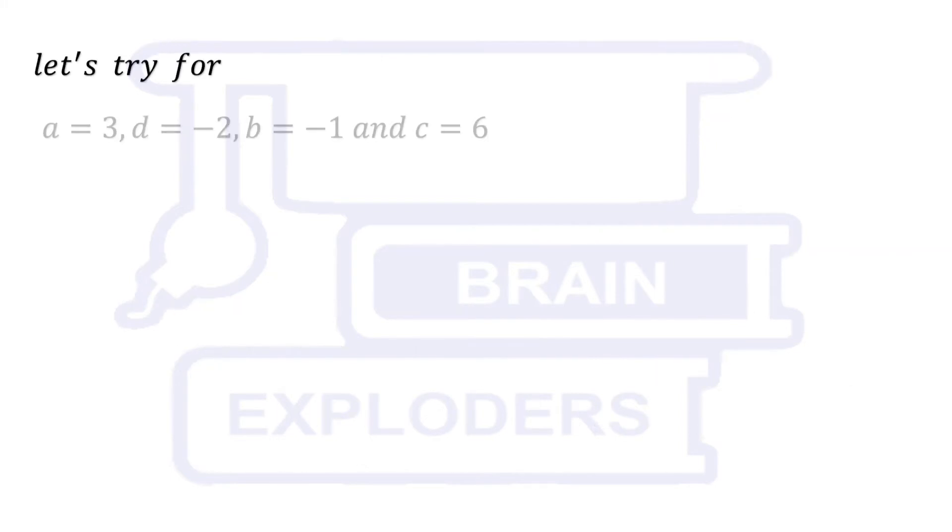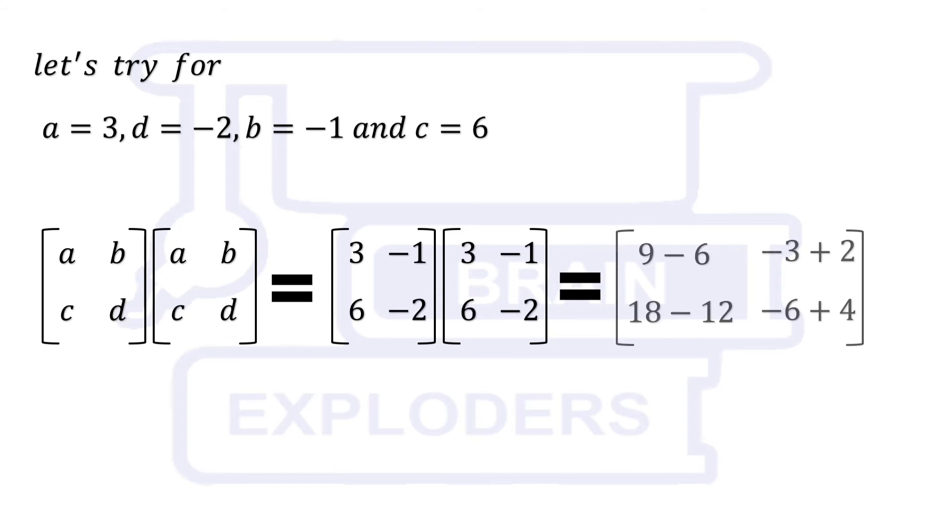Let's try for 3, minus 2, minus 1 and 6. Form the matrix and square it. We again get that same matrix as product.